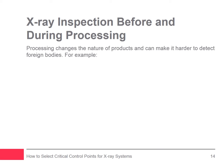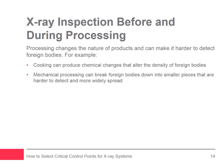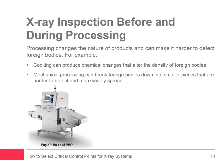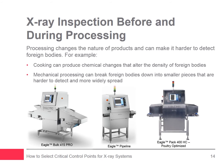Processing changes the nature of the product, often making it more difficult to find foreign bodies. Cooking can produce chemical changes that alter the density of physical foreign bodies, while mechanical processing can break foreign bodies up into smaller pieces. The density of cooked bones is much lower than that of uncooked bones — when bones are cooked, the collagen in them breaks down, weakening the bonds that hold the calcium together, making the bones harder to detect. This change is most pronounced in poultry bones. Foreign bodies can also damage processing equipment, leading to downtime, costly repairs, and additional metallic foreign bodies from damaged machinery. Typical x-ray systems used before or during food processing are bulk flow and pipeline x-ray systems, although conveyorized x-ray systems are also available to inspect products such as raw chicken.